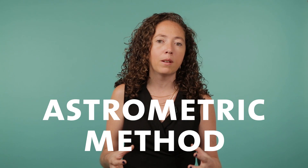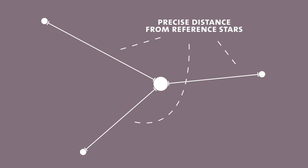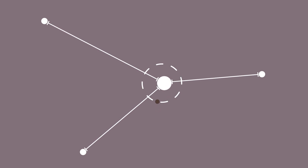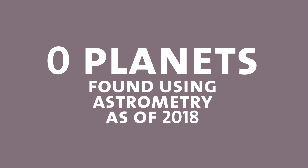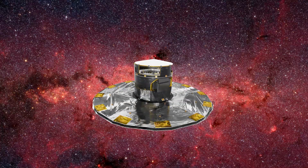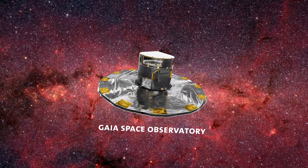The other way you can take advantage of that wobble is something called the astrometric method, where you very, very carefully watch the position of a star and can actually see it jump back and forth due to a planet pulling it. While we have yet to discover a planet using this method, there are new catalogs and surveys that will allow us to detect planets this way.